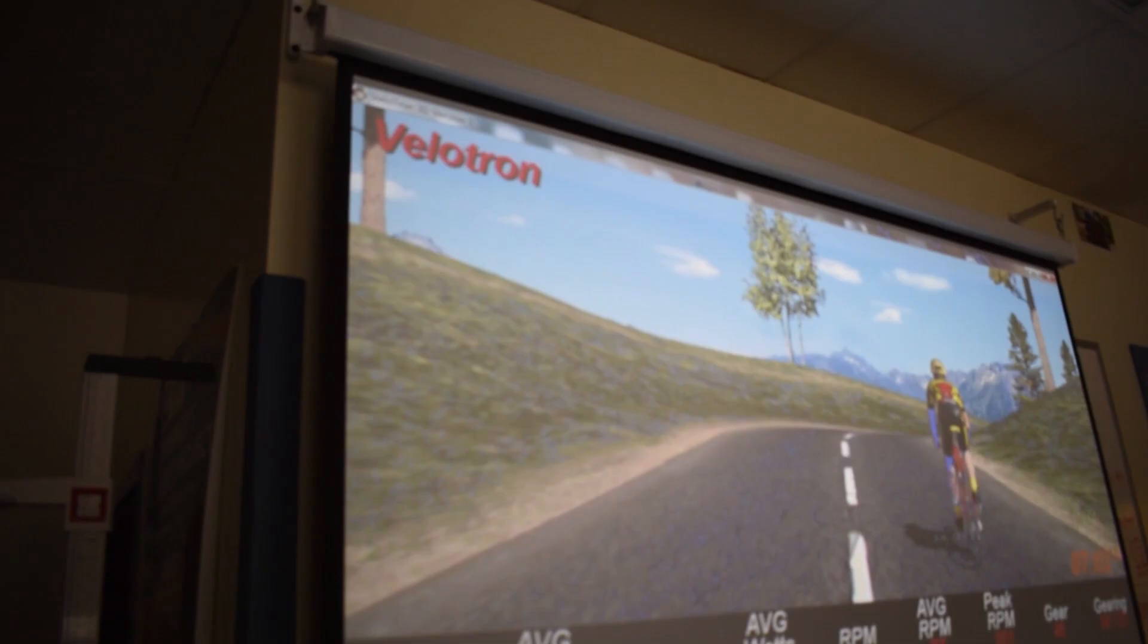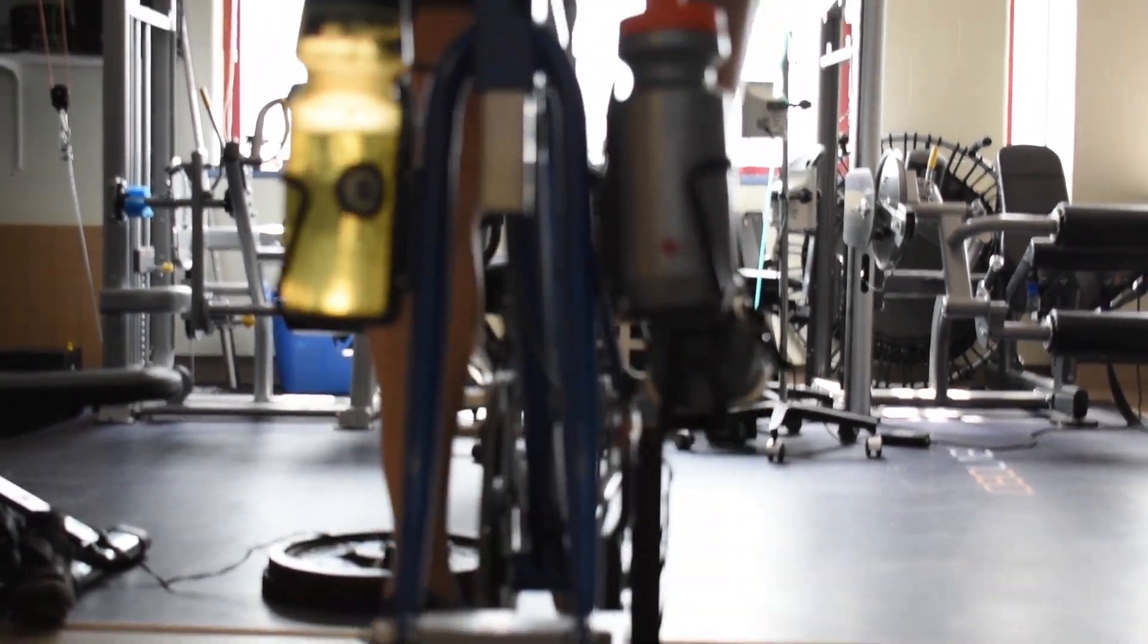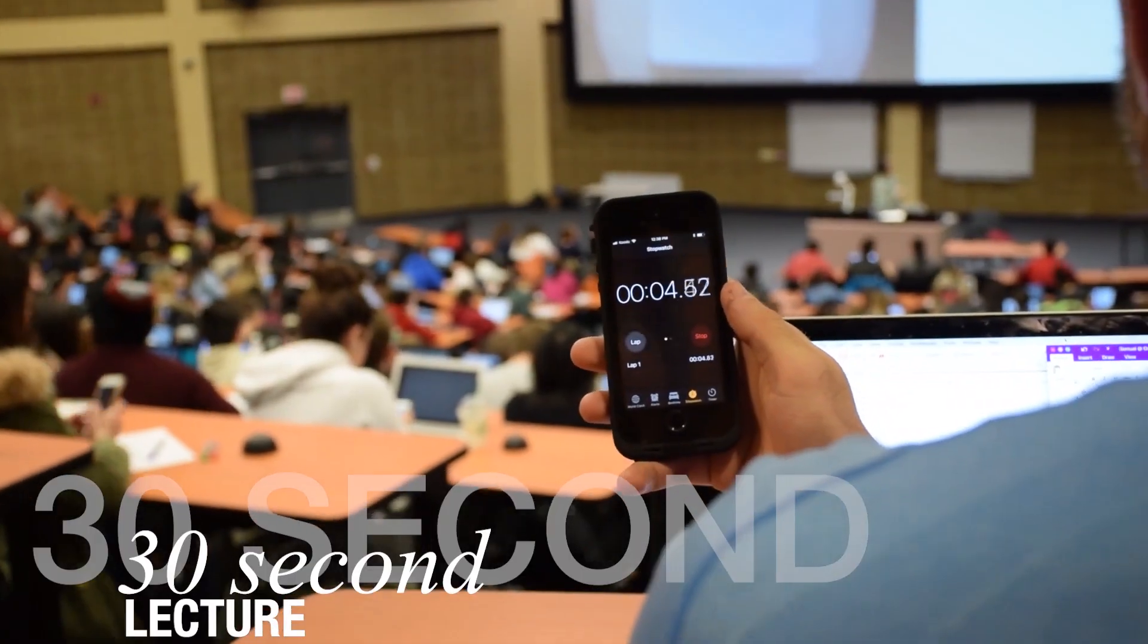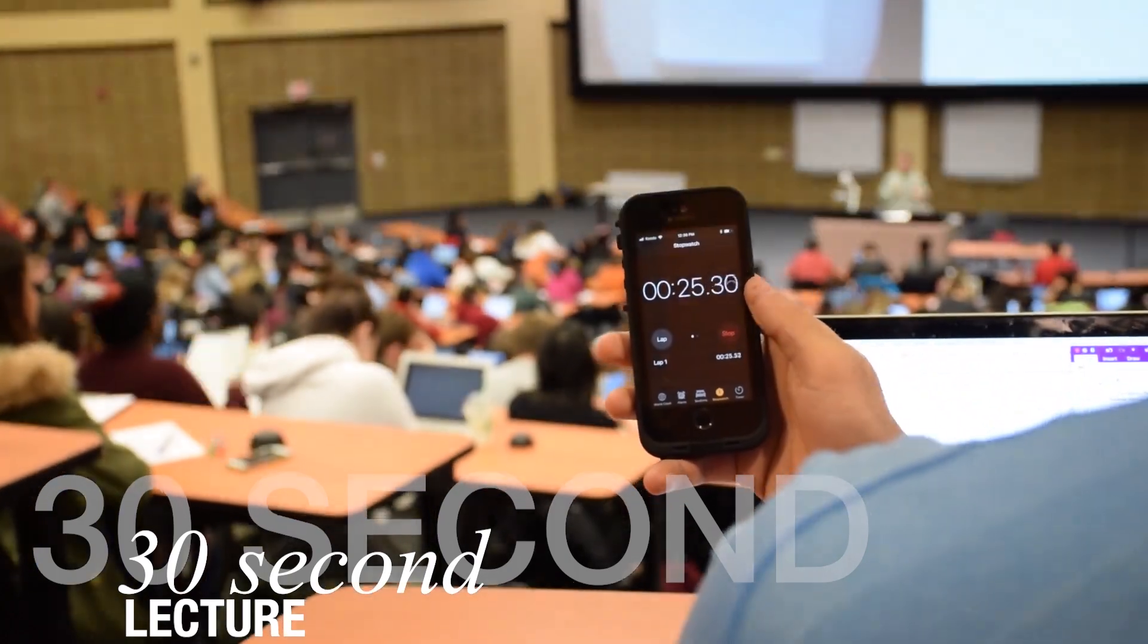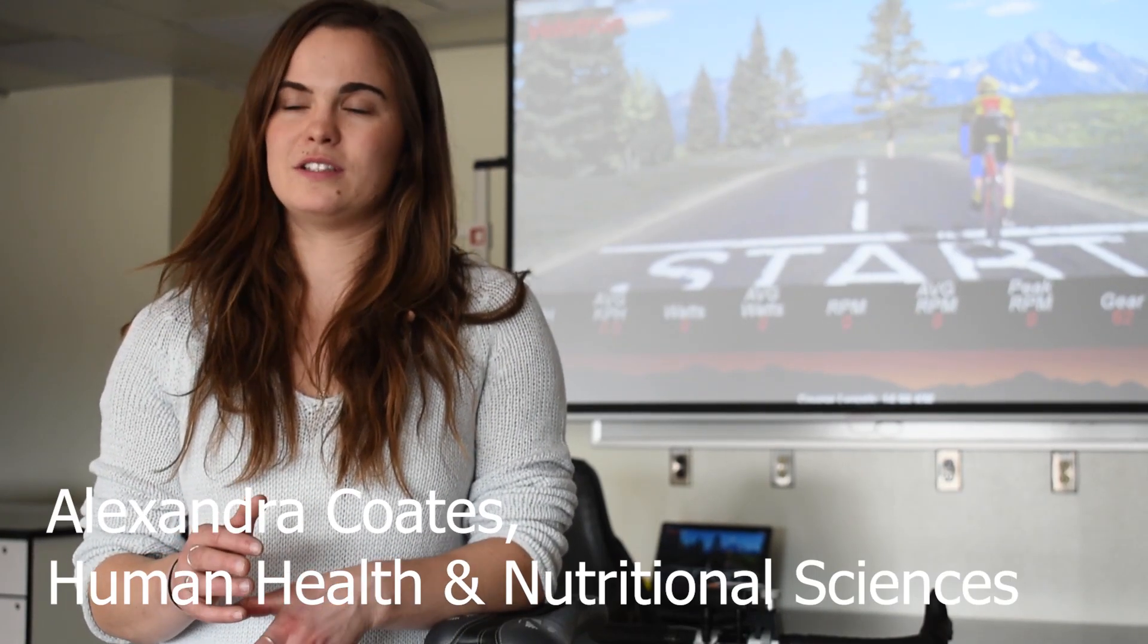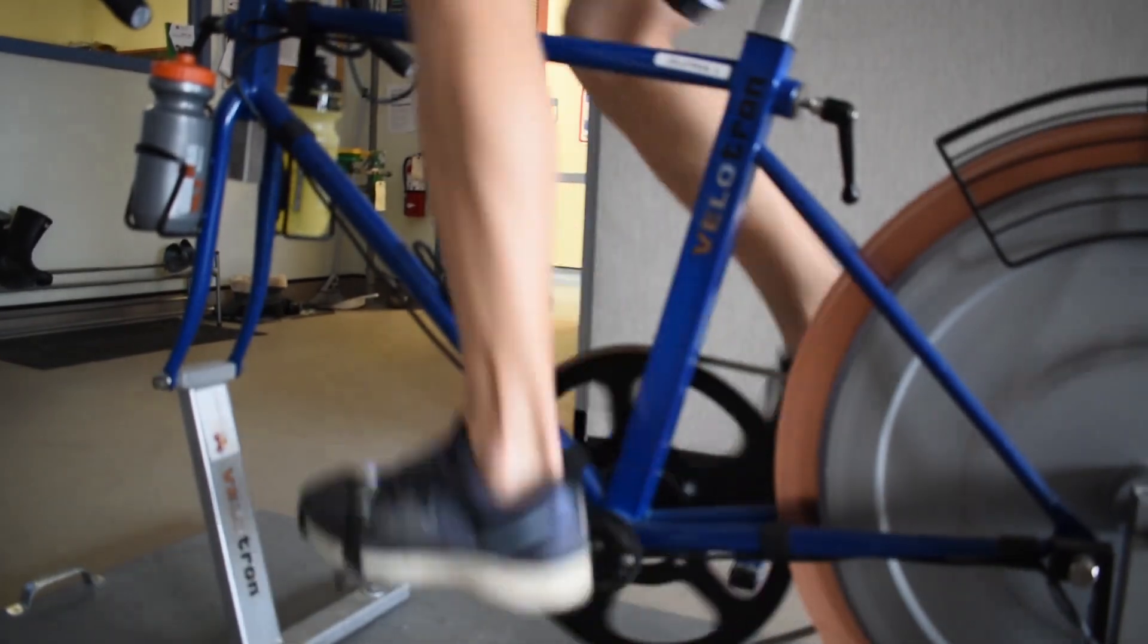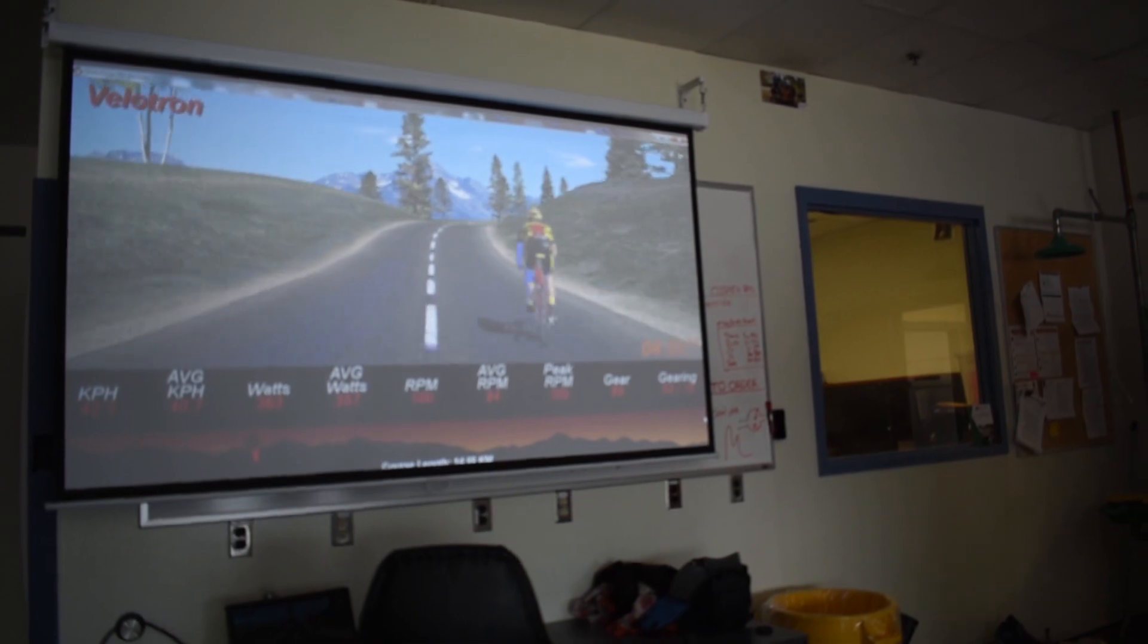This particular study was trying to figure out the mechanisms behind underperformance with overtraining. We were looking specifically at the autonomic nervous system and muscle sympathetic nerve activity, which is the only direct way to measure sympathetic activity in the body.